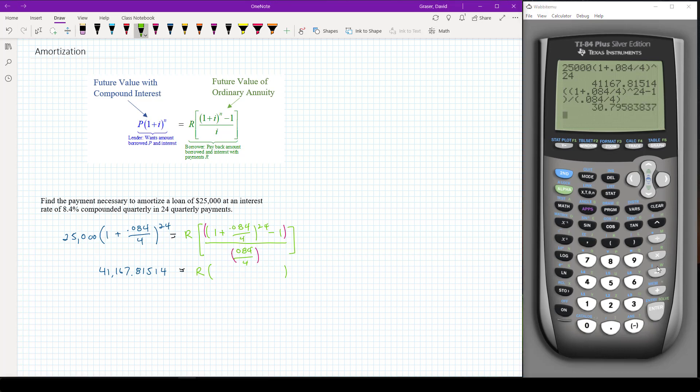And what I get is 30.79583837. I'm going to be careful to keep all these decimal places because if I change and start rounding things that could cause some problems.